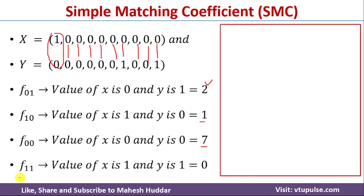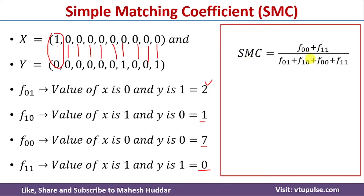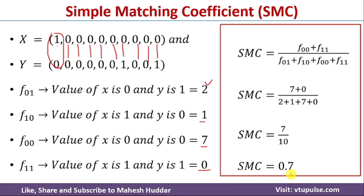The last combination is F11, where both X and Y should be 1. We don't have any such combination, so F11 equals 0. Now with all four values calculated, we can compute the Simple Matching Coefficient using the formula: SMC = (F00 + F11) / (F01 + F10 + F00 + F11). Substituting the values, we get SMC = 0.7.